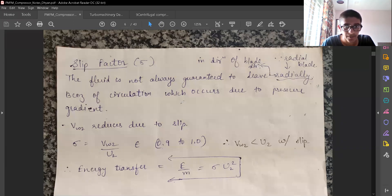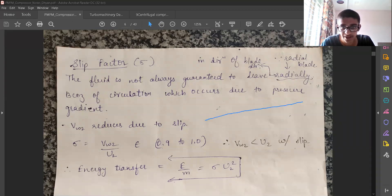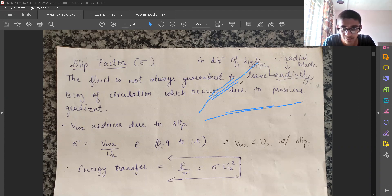If we have a blade, let's say this is the side view of the blade. When the flow is there very close to the blades and the next blade, let's say we have radial blades and next blade is over here. When the flows are very close to blades, there are pressure gradients which are happening and due to these pressure gradients, the velocity is not purely radial.